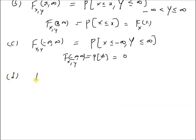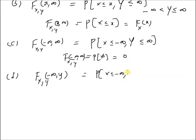Next is F(x,y) of minus infinity comma y. That is, Y can take any value less than small y, but X should always be equal to minus infinity. This is the probability that X is less than or equal to minus infinity and Y is less than or equal to small y. Again, this is also an empty set, so the probability is equal to zero.